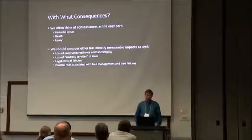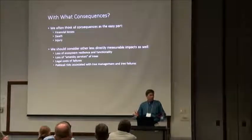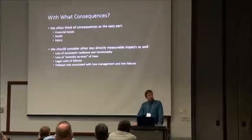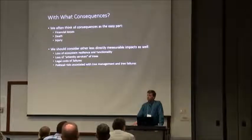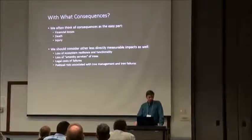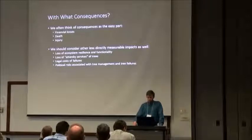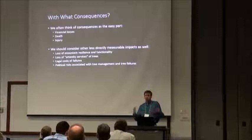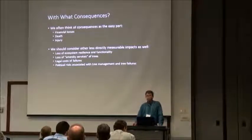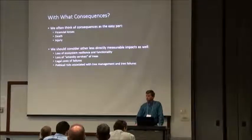When we think about consequences, we often think it's the easy part — financial losses, death, injury. But we need to think broadly: ecosystem resilience, attachment to place, loss of amenity services, legal costs of failures, and possibly political risks associated with tree management and tree failures. Consequences aren't just the easy things to capture; they're much broader. Particularly with urban trees, there are a lot of other factors at play, and capturing all of that in a risk assessment can be hard.